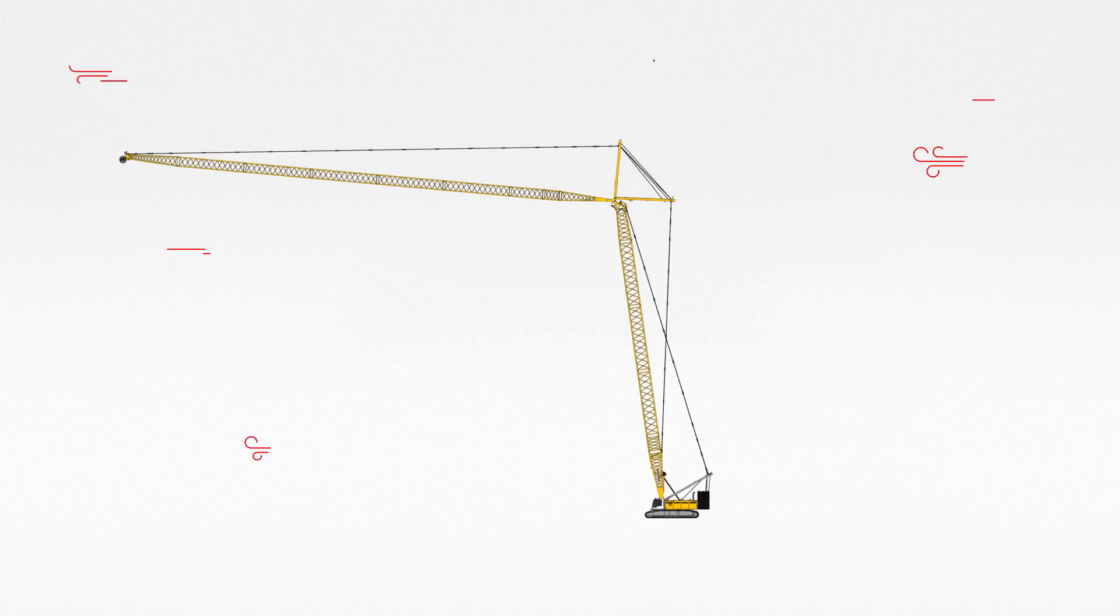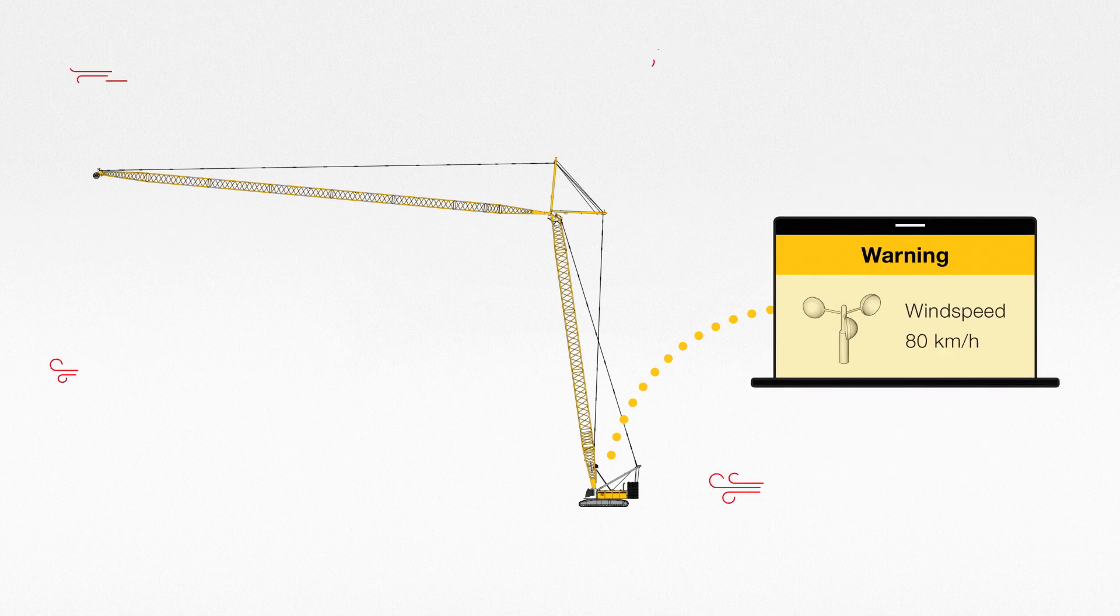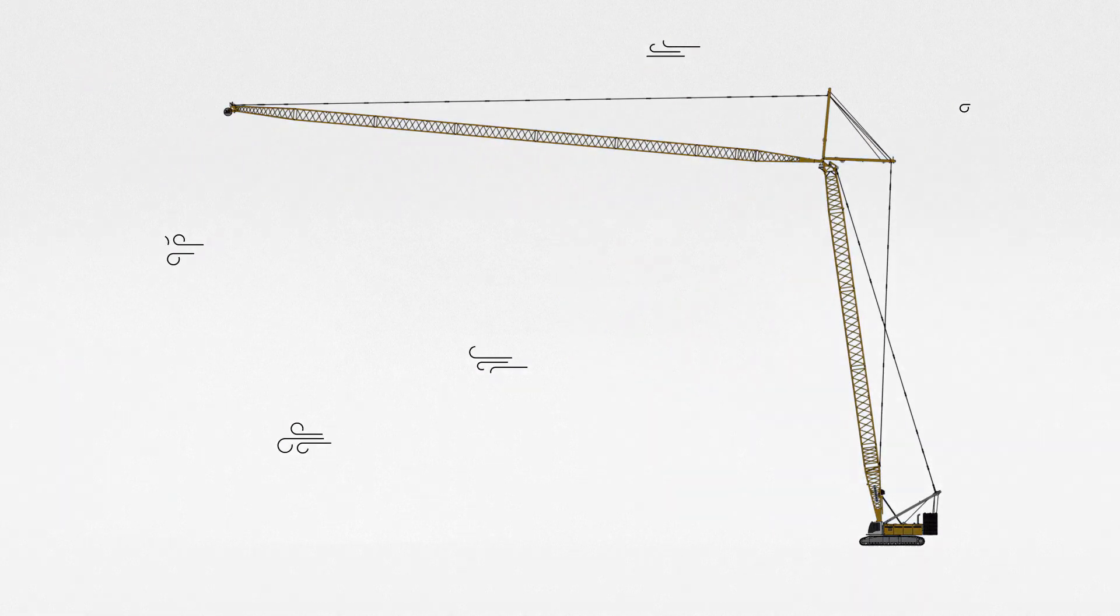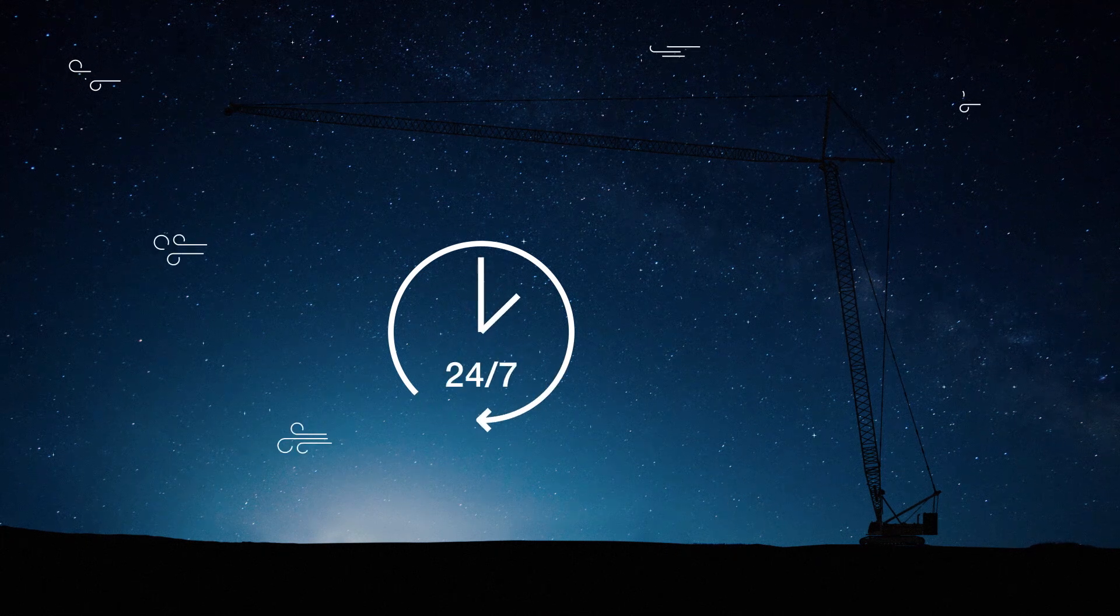When the conditions are becoming dangerous, a warning is sent to your mobile or device. This real-time calculation works 24-7, even when your crane is turned off.